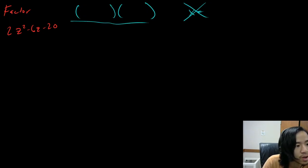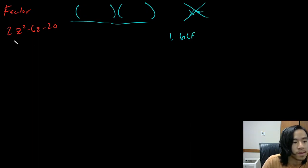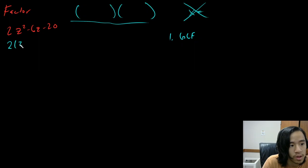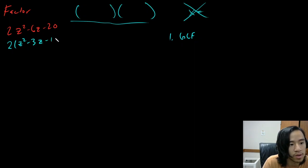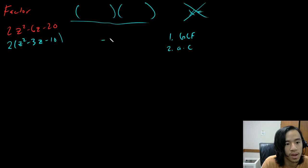So let's go ahead and do this question. Step one: always check for GCF. Right now we can take out a two. So two parentheses, Z squared minus six Z divided by two is three Z, and then negative 20 divided by two is negative 10. Now after this, you're going to multiply a times C. So a is one and C is negative 10, and we're going to write that over to the side and make a little T chart.